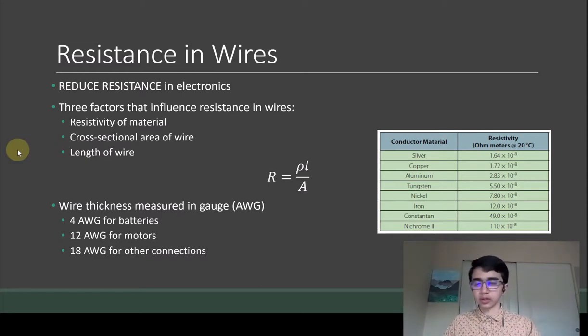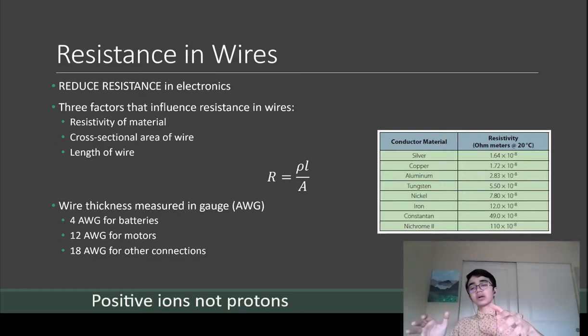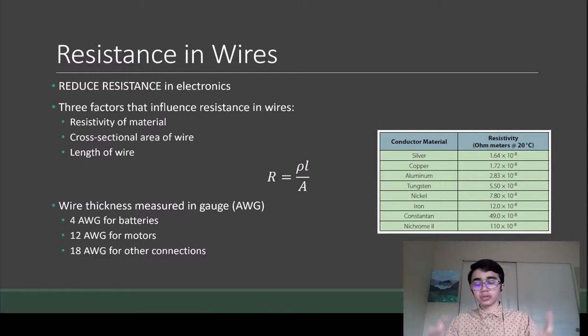What happens is that when you choose an inappropriate gauge for your wires, when the electricity flows through the thinner wire, it bombards the protons and starts heating up. When the wire heats up too much, it will melt and kind of destroy all your electronics, so you don't want that to happen.